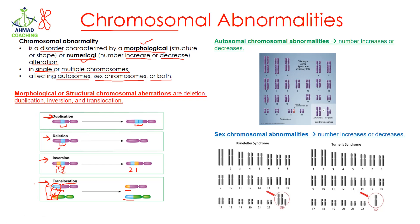These four types — duplication, deletion, inversion, and translocation — are known as morphological or structural chromosomal abnormalities. Along with this, autosomes are also included in chromosomal abnormality. In autosomal chromosomal abnormalities, the autosome number may increase or decrease. Autosomes are chromosome pairs 1 to 22, while the 23rd pair is the sex chromosome.